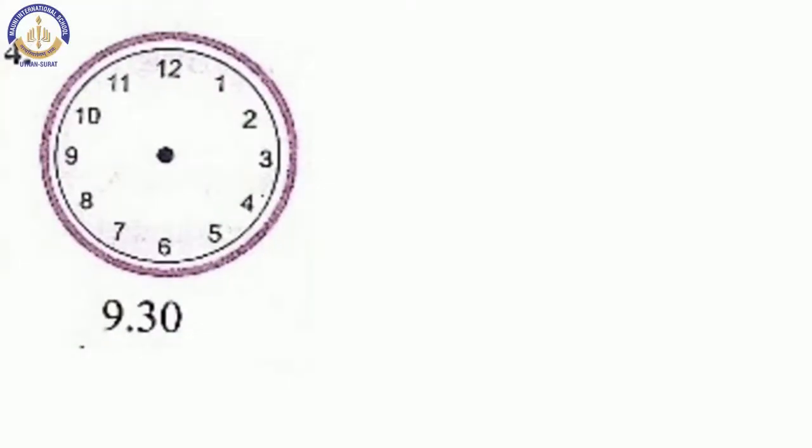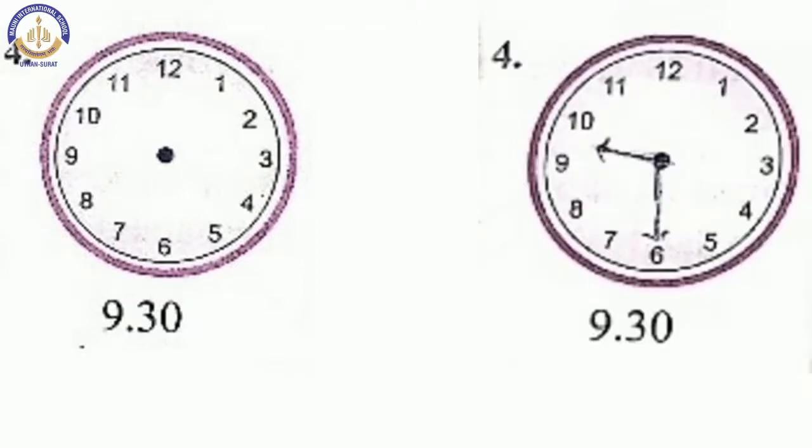Now, fourth one is nine point thirty. So, thirty means the minute hand is on six and the hour end is between nine and ten. So, draw the hands like this.